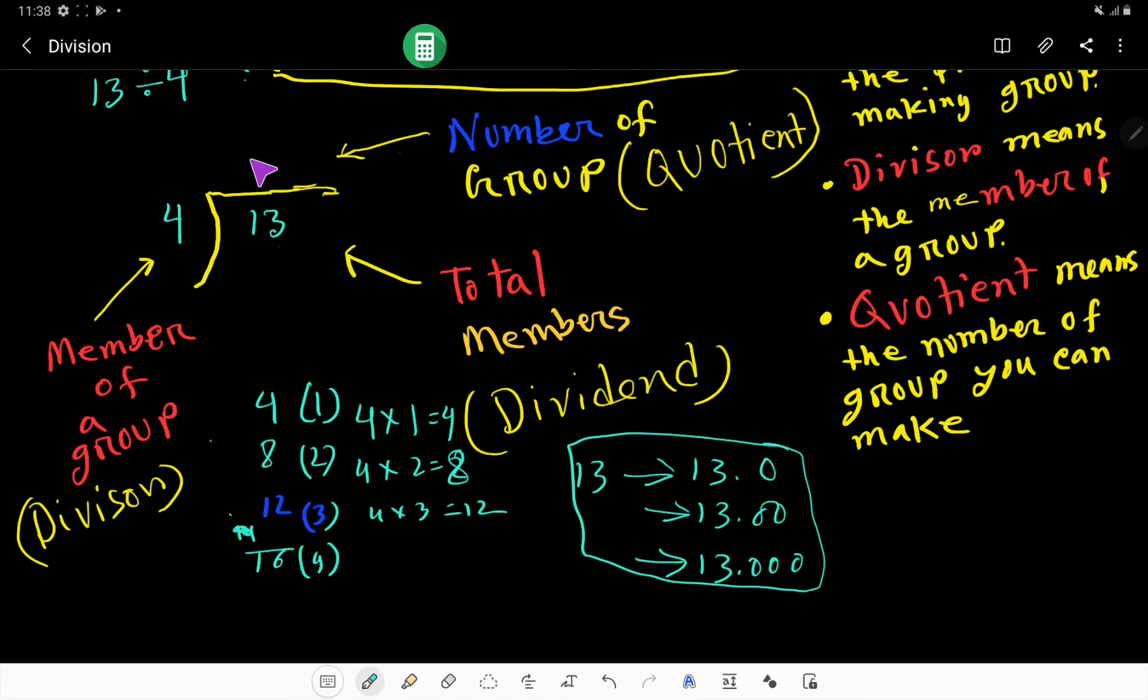4 goes into 13 three times. 3 times 4 is 12. I will write 12 here and then subtract: 3 minus 2 is 1, 1 minus 1 is 0. Our remainder is 1 and our quotient is 3. I can make 3 groups and will have 1 left. The answer is 3 remainder 1.